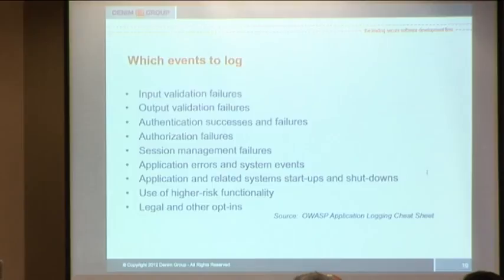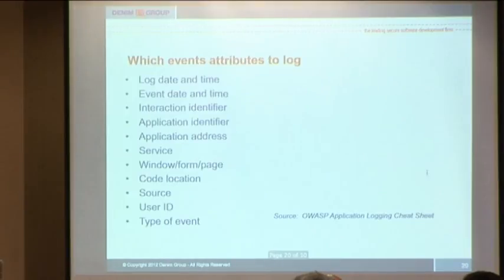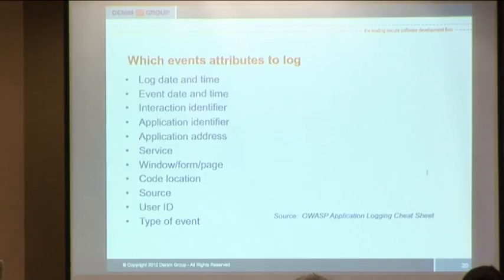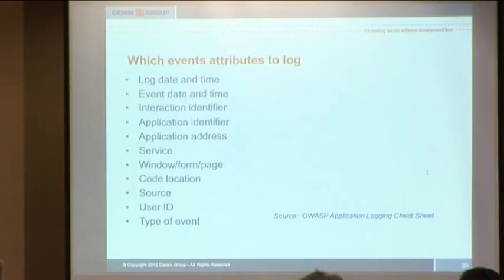For each event — and you can turn up or turn down these details — obviously when the event was logged is important. You assign a date to it, what app and what part of the app it talked to, what page if it's a web application, from what TCP service it came from, what user ID accessed it or tried to access it, and then what type of event. This is all from the OWASP application logging cheat sheet — a great starting point. Two documents: this and the Gunnar-Peterson article. If you read nothing else, I'd recommend those two.